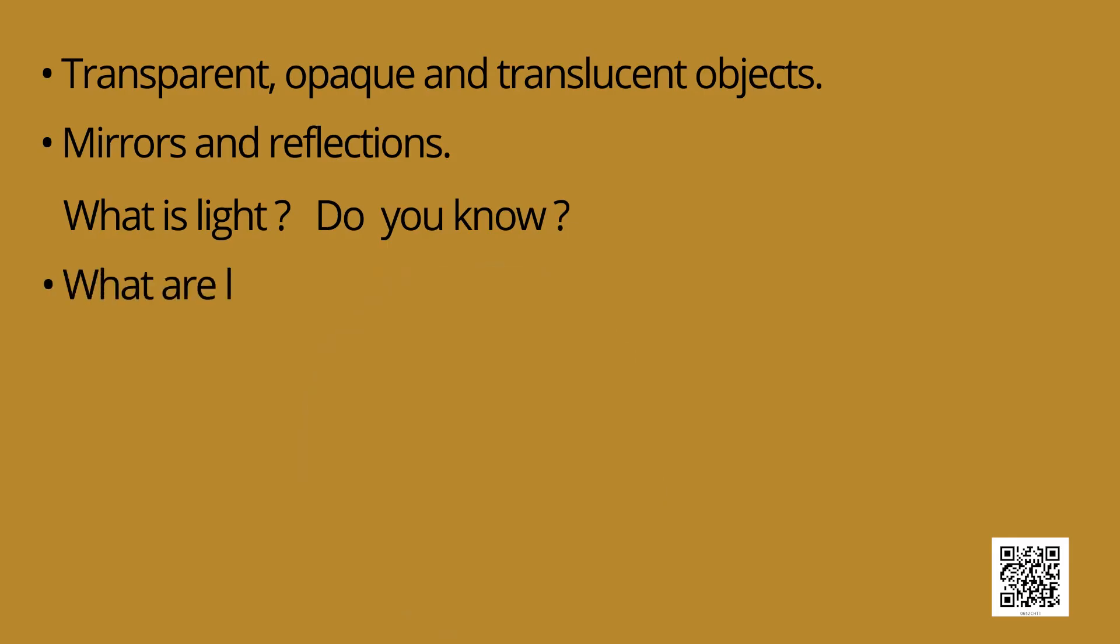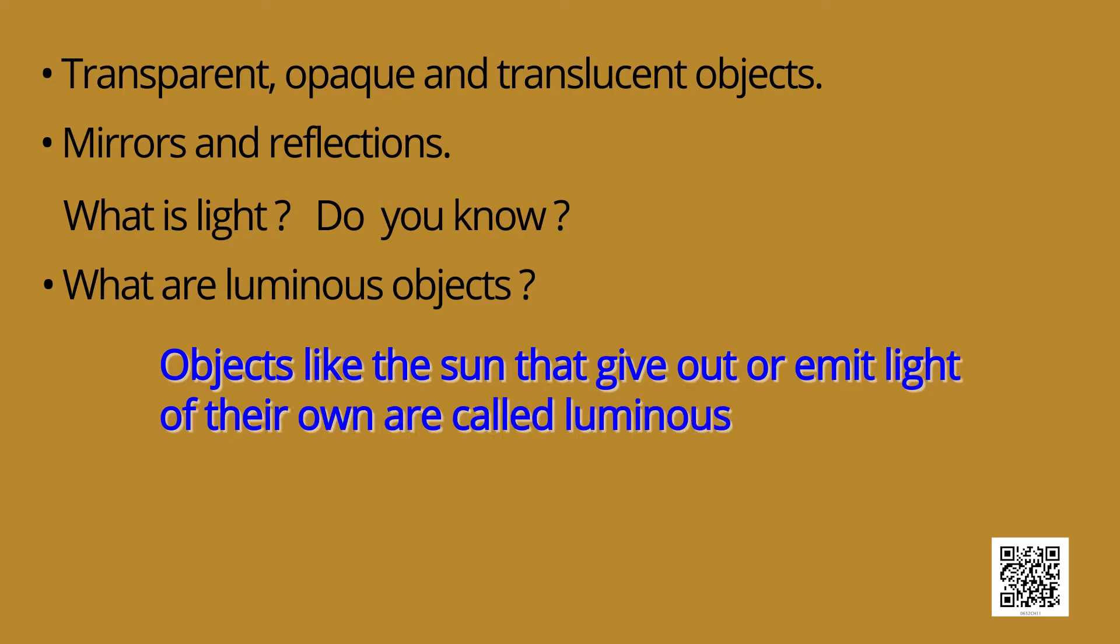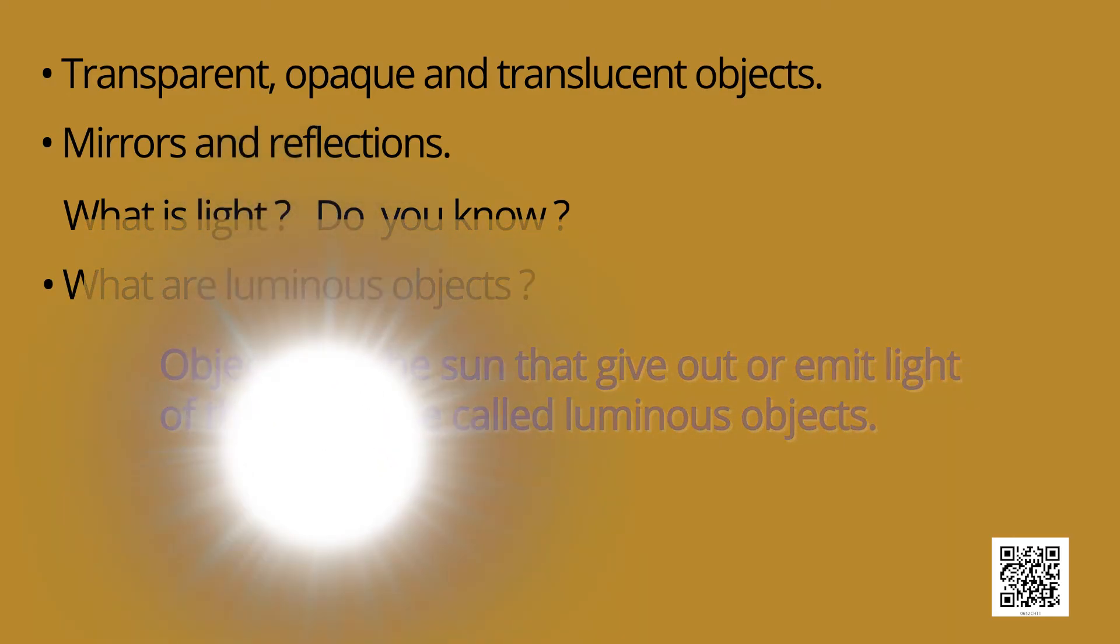What are luminous objects? Objects like sun that give out or emit light of their own are called luminous objects like sun, bulb.